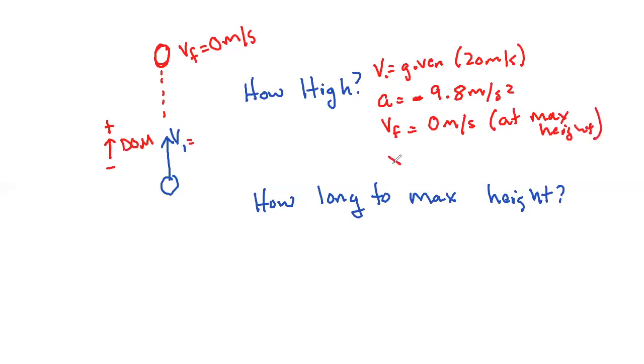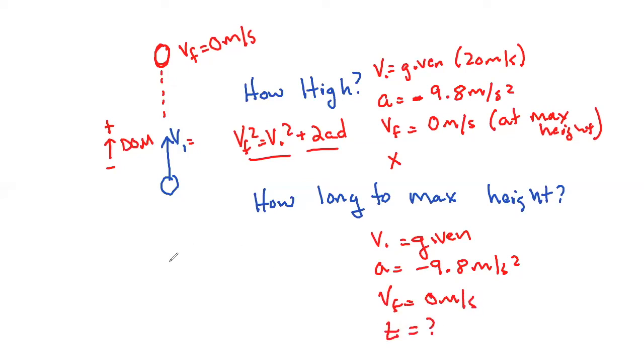All right. And now, they'll ask for how high, X or D, depending on what class you're taking or what formulas you use. And then we have VF squared equals VI squared plus 2AD. Boom. And the same for how long to take. VI is going to be given. A hurts that VI because it slows it down. So, we have minus 9.8 meters per second squared. VF at max height is still going to be 0 meters per second. Now, they want to know how long did it take to get there. Very simple. VF equals VI plus AT. And this is going to be usually given. These formulas are all going to be given on your reference table.